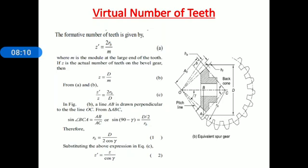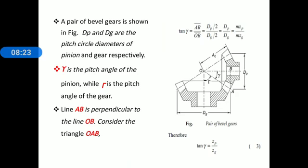This completes the virtual number of teeth for bevel gears. Now we discuss some important points for solving problems. A pair of bevel gears is shown in the figure. D_p and D_g are the pitch circle diameters of pinion and gear respectively. γ is the pitch angle of the pinion, while λ is the pitch angle of the gear.